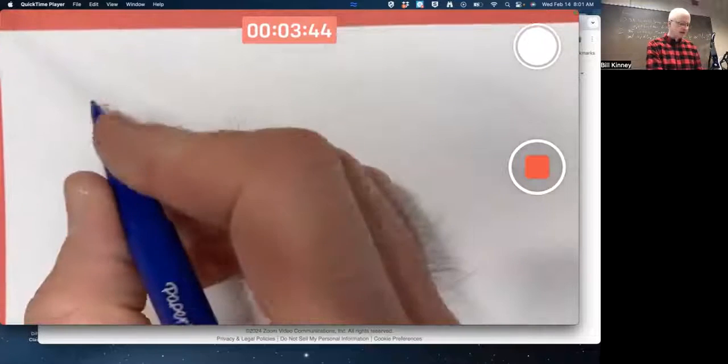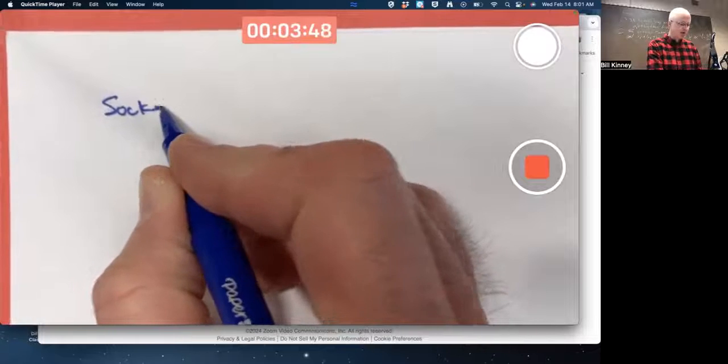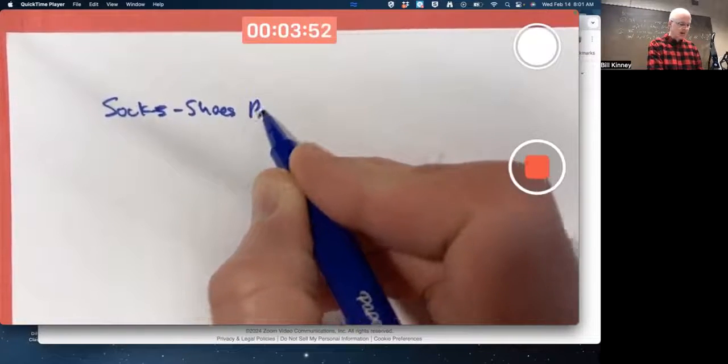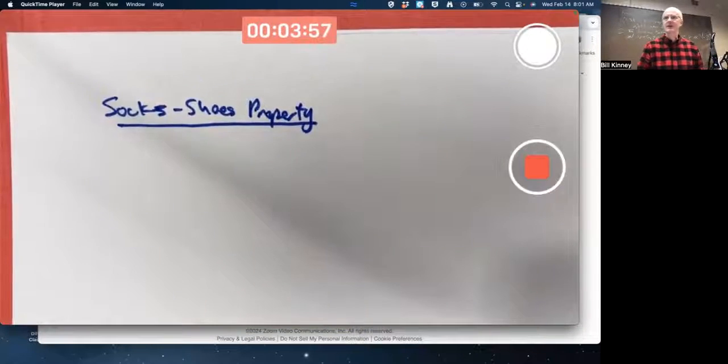First problem we're going to work on here is called the socks-shoes property. I'm not going to say why it's called the socks-shoes property right now, but I'll ask you after we finish it.